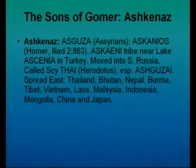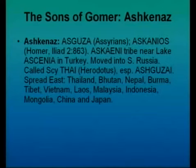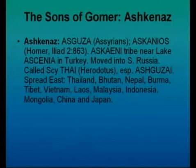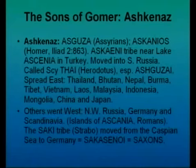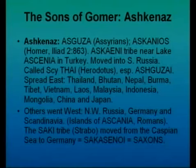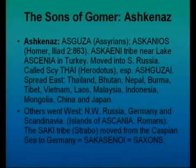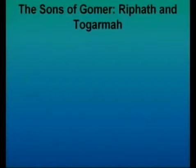Now the sons of Gomer: Ashkenaz. His descendants were known as the Asguza or the Askeni — Homer in his Iliad refers to them. They're known as the Askeni tribe near Lake Askenia in Turkey. They moved into southern Russia — called the Skithai according to Herodotus, or the Ashguzai. They spread east — we can trace them moving to Thailand, Bhutan, Nepal, Burma, Tibet, Vietnam, Laos, Malaysia, Indonesia, Mongolia, China, and Japan. Others went west into northwest Russia, Germany, and Scandinavia. The islands of Askenia, according to the Romans, is what gave the name Scandinavia. The Saki tribe, noted by Strabo, moved from the Caspian Sea to Germany, where they became known of course as the Saxons. Ripath was the father of the Paphlagonians — the Finno-Ugric people: the Finns, the Lapps, and the Hungarians. Togarmah was known as Tilgarimu by the Assyrians, or Tegarama by the Hittites, and Josephus refers to them as the Phrygians who moved into modern-day Turkestan.